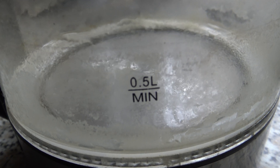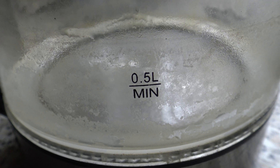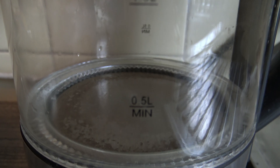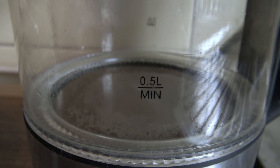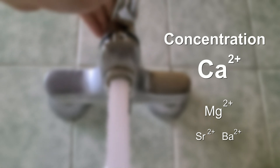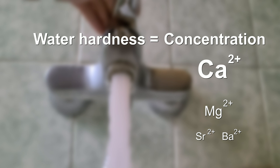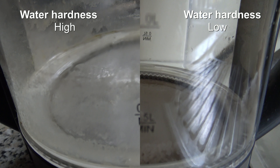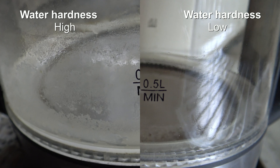Interestingly, in some households lime scale forms faster than in others. These water kettles are of the same type and from two households only 3 km apart in the same city. The difference is in the concentration of the ions of the earth alkali metals — it is called water hardness. The anions are rarely taken into account because they are mostly carbonate. When the water hardness is high, the formation of lime scale is faster.